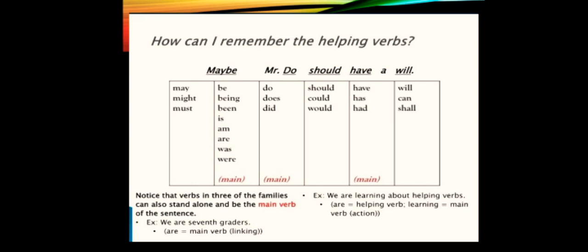These are the verb families. Notice that the verbs in three of the families can also stand alone and be the main verb of the sentence. Should ho gaya, do-does-did ho gaya, aur have-has-had ho gaya. Be ho gaya. In ko hum batour main verb, sentence mein use kar sakte hain. Aur jab in ko hum main verb ke tor pe use karein, to in ko hum linking verb bhi keh sakte hain. Further explanation on the next slides.